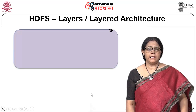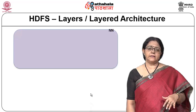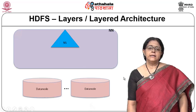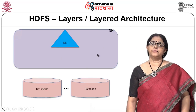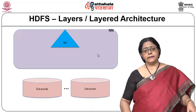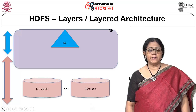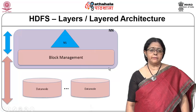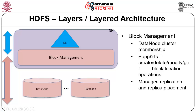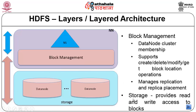HDFS works with two layers. The first layer is the name space layer, which ensures correctness of the namespace. The second layer is block storage management, handled by the name node, which includes giving data nodes cluster membership, supporting block-level operations, and managing replication and replica placement. The storage layer physically handles reads and writes because the data nodes contain the actual data — the name node only stores metadata.